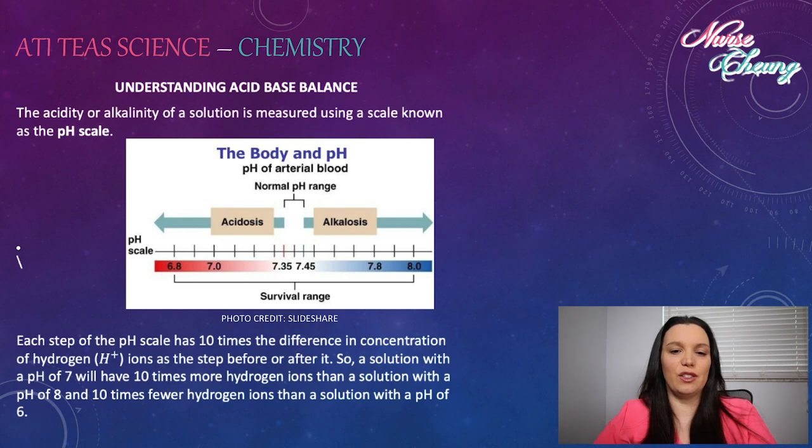The acidity and alkalinity of solutions is measured using a scale known as the pH scale. Each step of the pH scale has 10 times the difference in concentration of hydrogen ions as the step before or after it. So a solution with a pH of 7 will have 10 times more hydrogen ions than a solution with a pH of 8 and 10 times fewer hydrogen ions than a solution with a pH of 6.